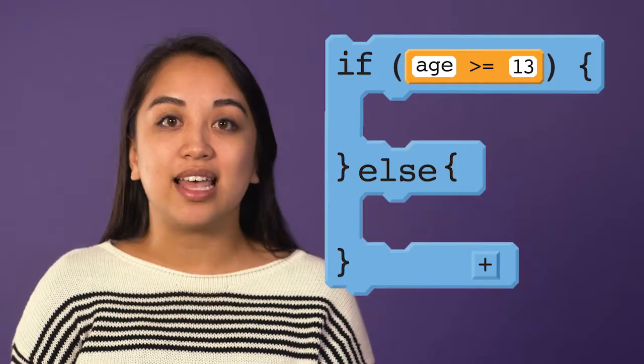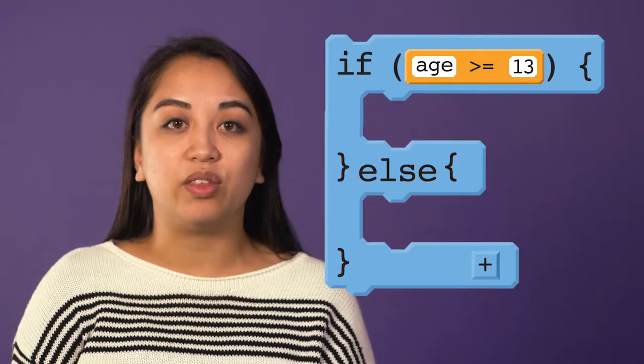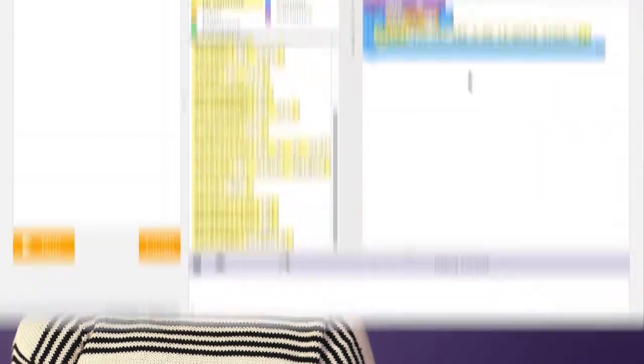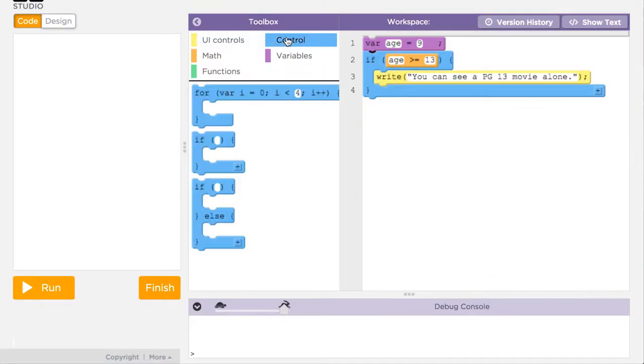The commands contained in this else statement only run if the Boolean condition in the if statement is false. In App Lab, you can add an else statement by either dragging out the if-else block or by clicking the plus symbol in the bottom right corner of the if block.